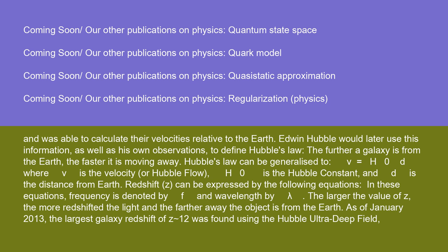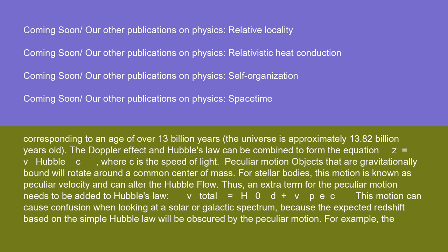Edwin Hubble would later use this information, as well as his own observations, to define Hubble's law: the further a galaxy is from the Earth, the faster it is moving away. Hubble's law can be generalized to V = H₀d, where V is the velocity or Hubble flow, H₀ is the Hubble constant, and d is the distance from Earth. Redshift z can be expressed by equations where frequency is denoted by f and wavelength by lambda — the larger the value of z, the more redshifted the light and the farther away the object is. As of January 2013, the largest galaxy redshift of z=12 was found using the Hubble Ultra Deep Field, corresponding to an age of over 13 billion years; the universe is approximately 13.82 billion years old.